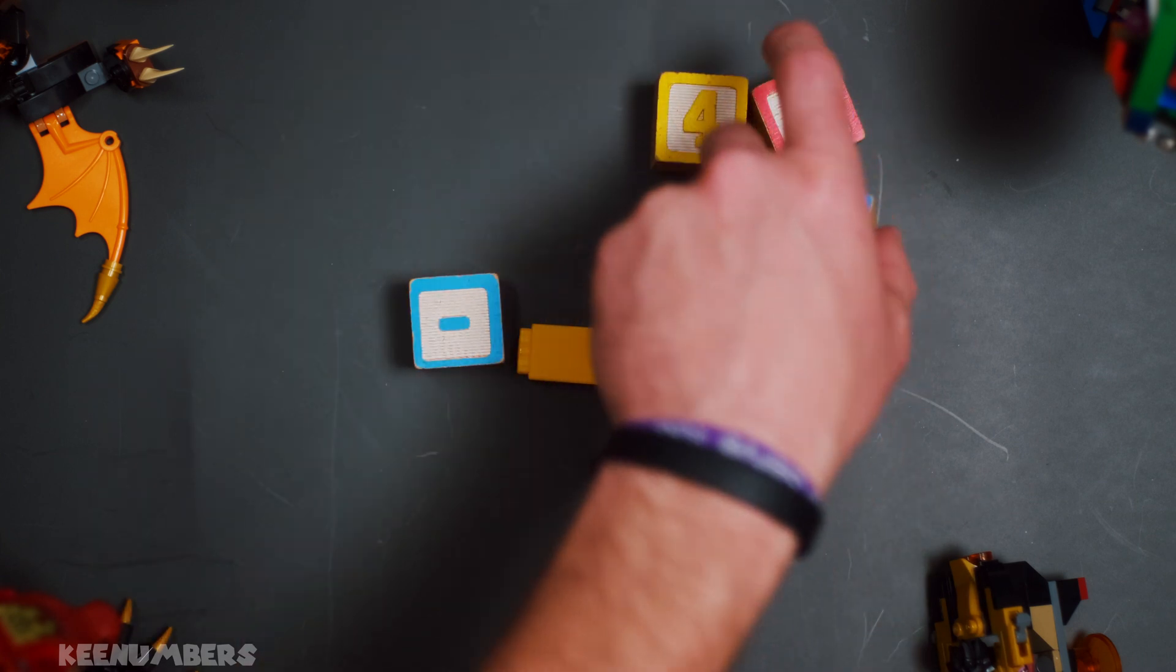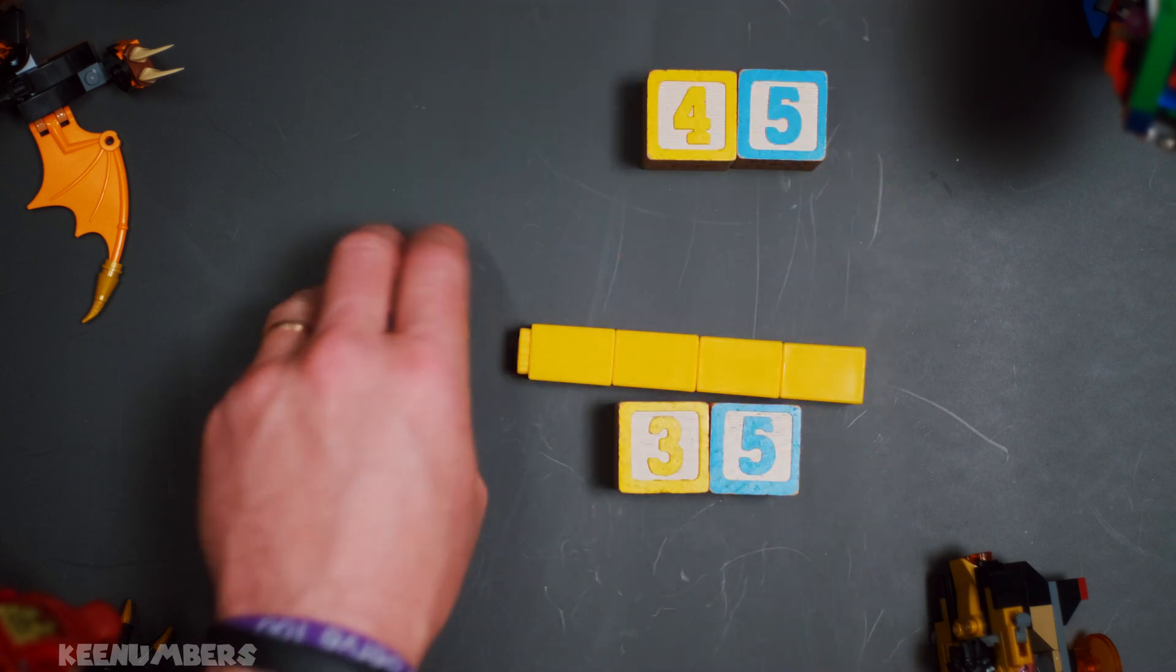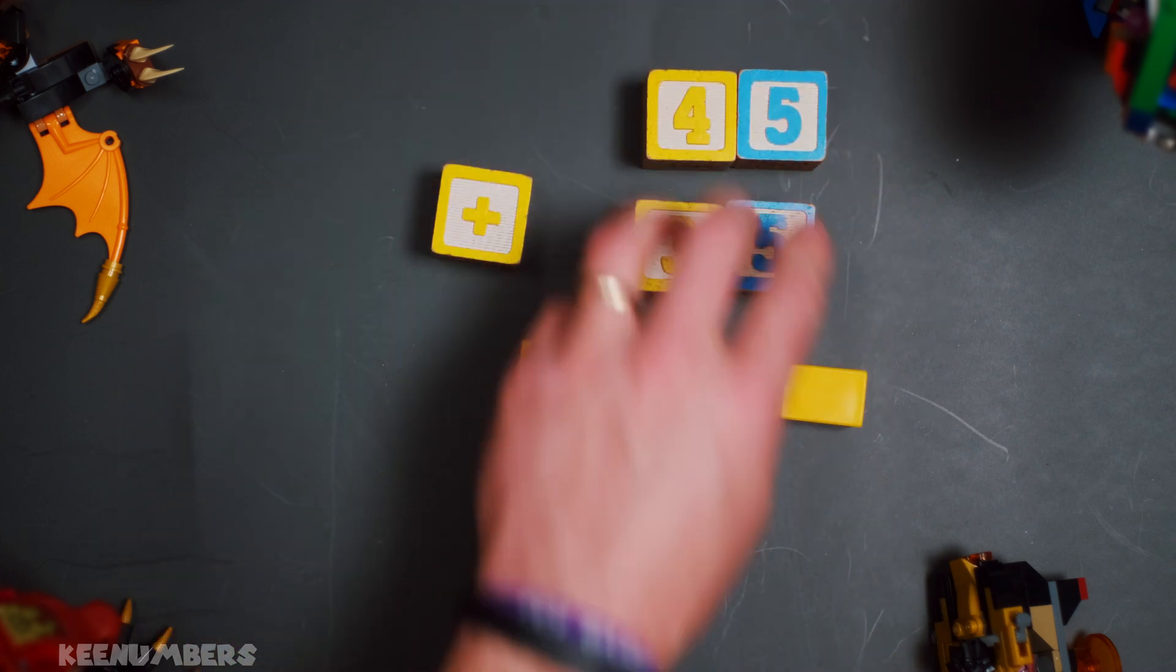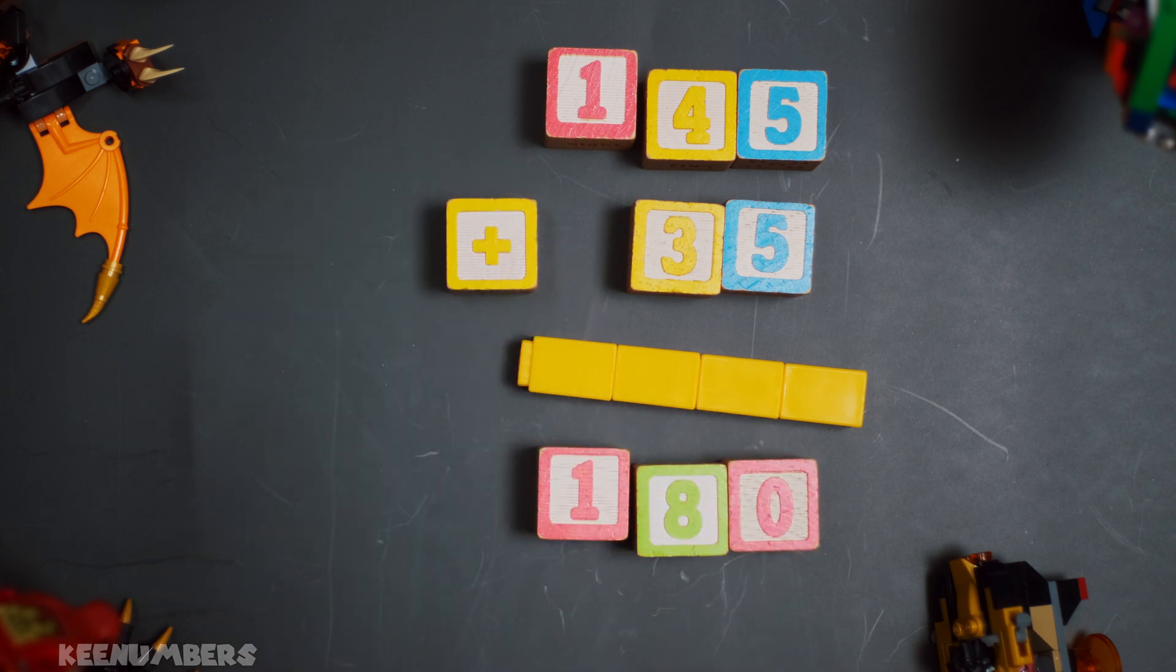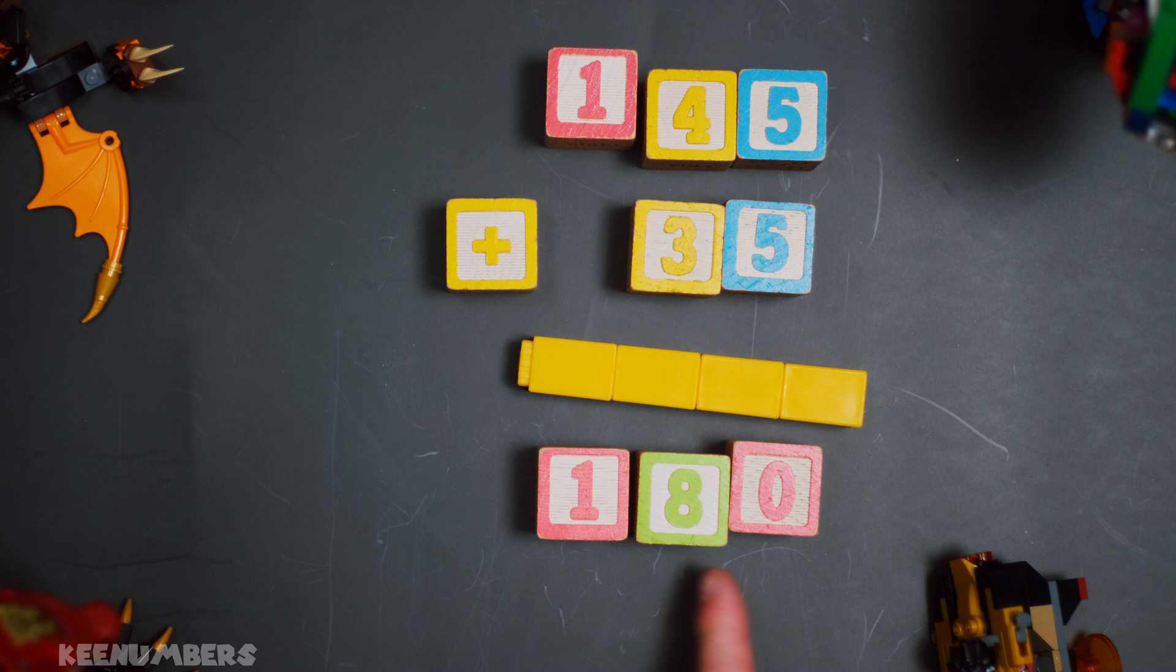And you can check that out. It's real easy. Let's just convert this into an addition problem like so. 145 plus 35, that's going to be, sure enough, 180. And Bob's your uncle.